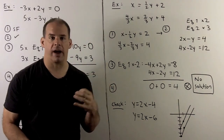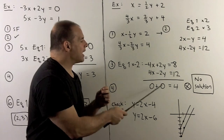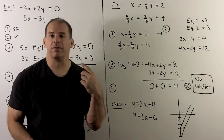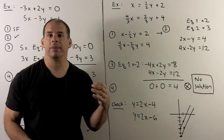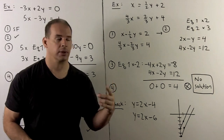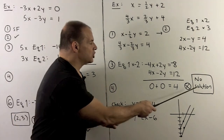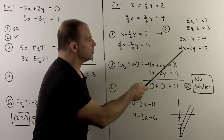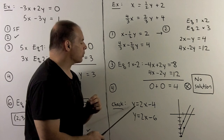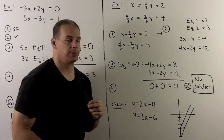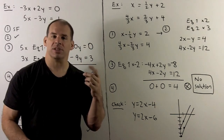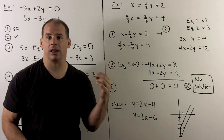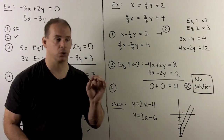Adding down, the x's go to zero and the y's go to zero, but the constants give 0 equals 4 — a false statement — implying no solution. Checking by isolating y in both equations yields y equals 2x minus 4 and y equals 2x minus 6: the same slope but different intercepts, confirming these are parallel lines with no intersection.